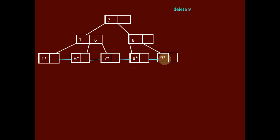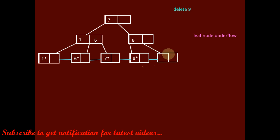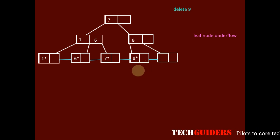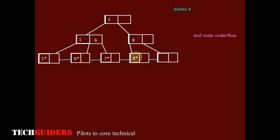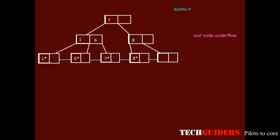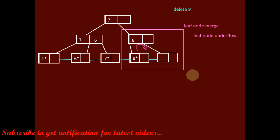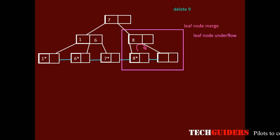Now suppose we need to delete 9. Deleting 9 will again cause a leaf node underflow. The minimum number of keys required is 1, and there are no keys remaining in this node. The first option is to try to borrow: this underflow node has one left sibling, but the sibling has exactly the minimum number of keys — only one key. Thus the sibling node is not able to provide a key to the underflow node, so the next option is to merge.